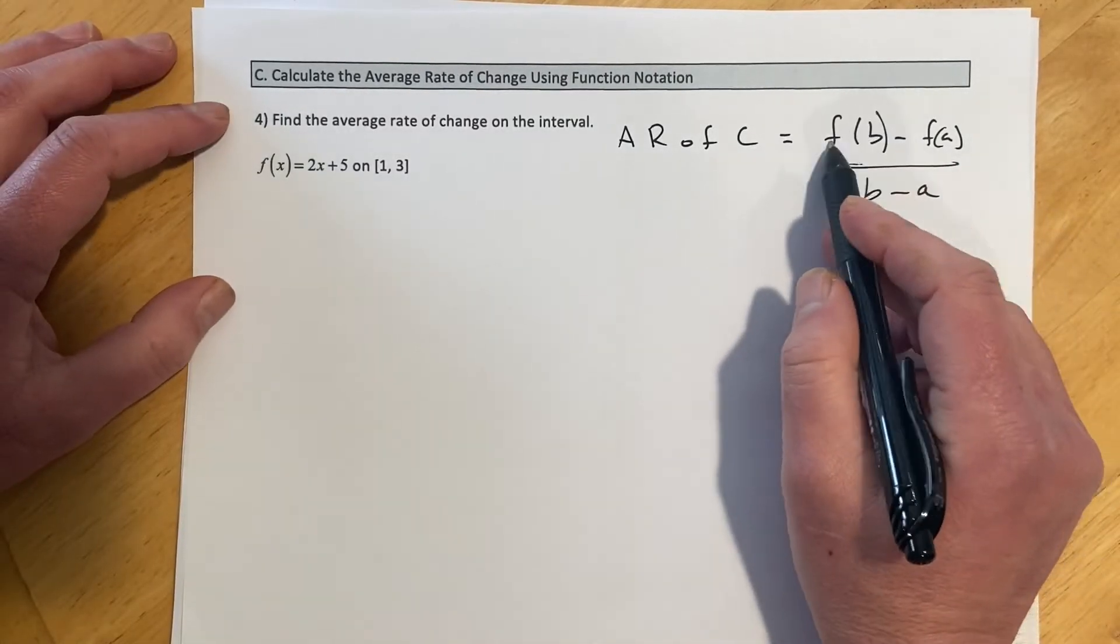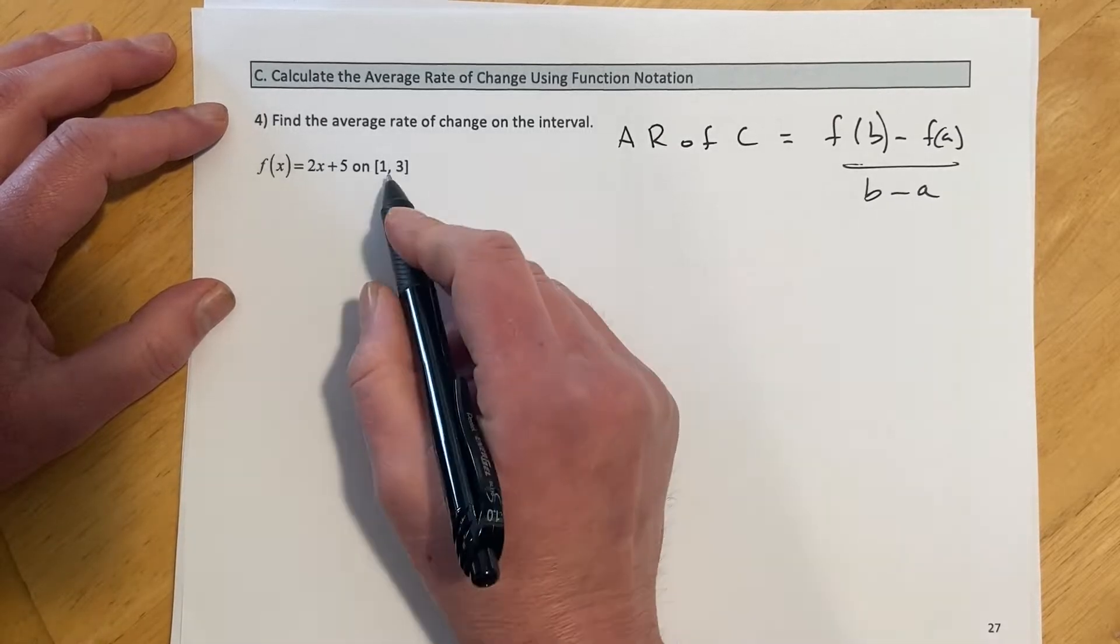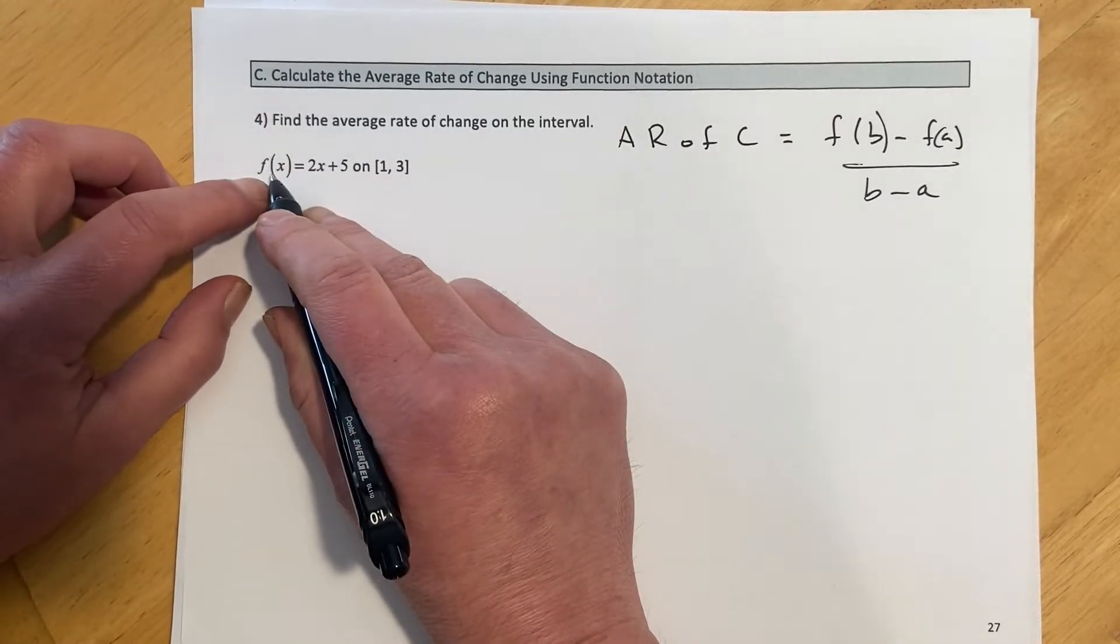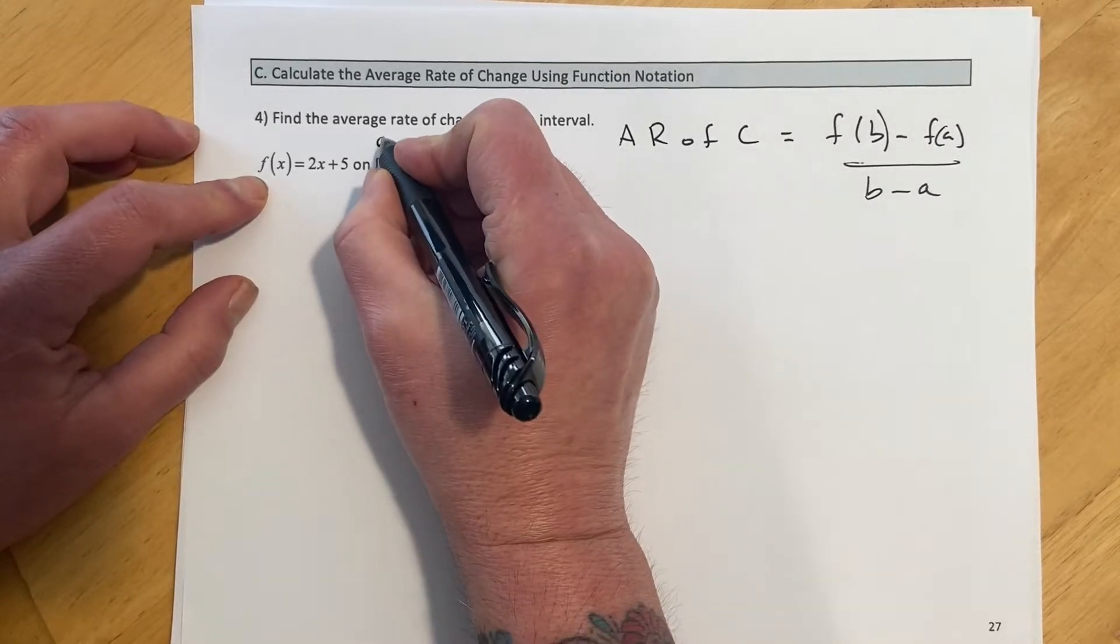And so again, that looked like f(b) minus f(a) over b minus a. So for this thing, this is going to be what we're going to plug into. This is our equation, and this is our a and our b.